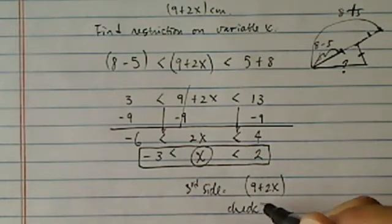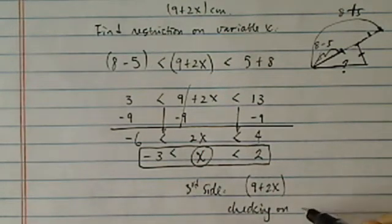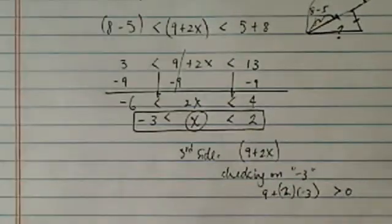Okay, so checking if it's minus 3, then it's 9 plus 2 times minus 3. This still is bigger than 0. So all the sides are still positive.